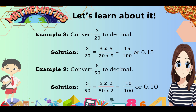Example number 9: Convert 5 over 50 to decimal. Multiply by 2 over 2: 5 times 2 equals 10, and 50 times 2 equals 100, giving us 10 over 100, or 0.10. In some cases, fractions cannot be multiplied by a certain number to arrive at a denominator with a power of 10, so we simply divide the numerator by the denominator to convert it into a decimal.